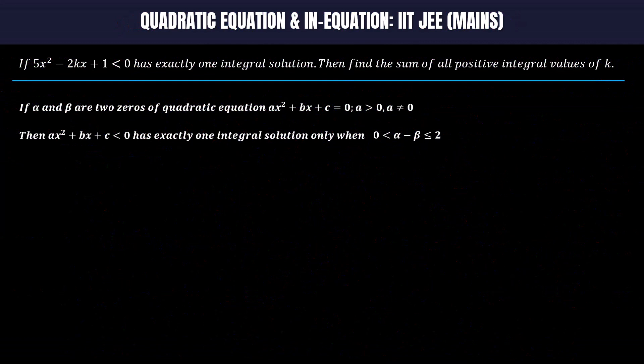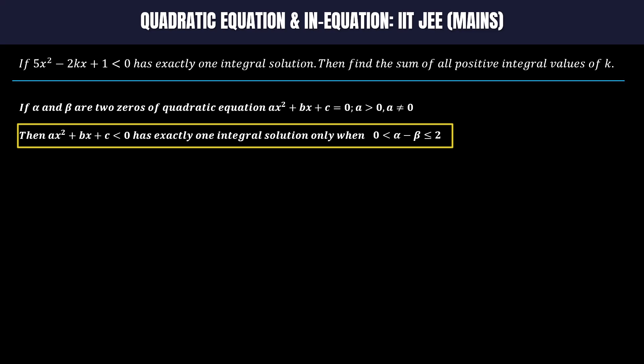So here is the conclusion: If α and β are zeros of the corresponding quadratic equation of inequality ax² + bx + c < 0, then for exactly one integral solution of the inequality, α - β must be greater than 0 and less than or equal to 2.